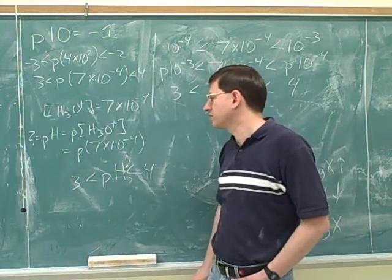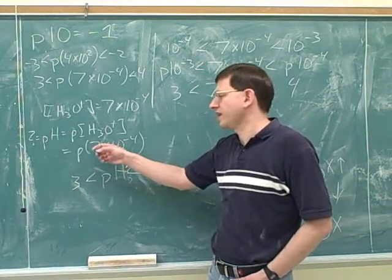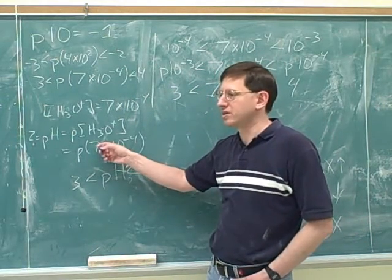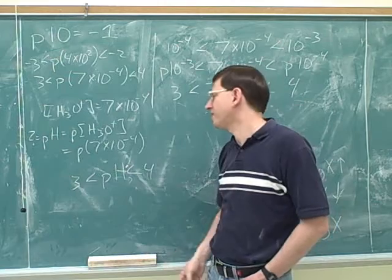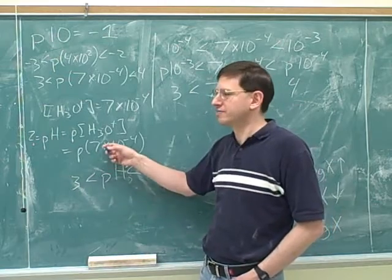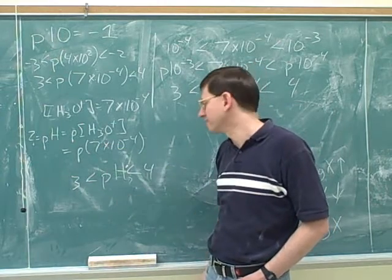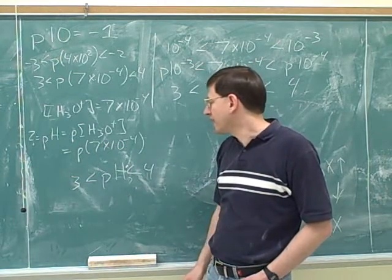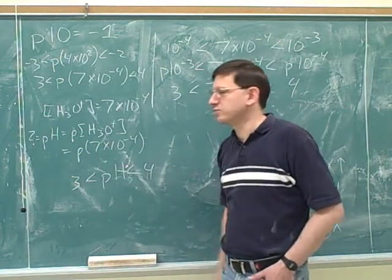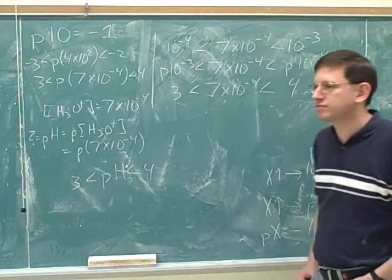Even though in textbooks they don't usually write the p right next to the number that you're taking the p of, that's actually a good habit for us for solving problems. And here we get a pH between 3 and 4.